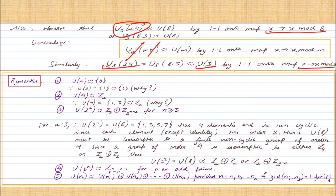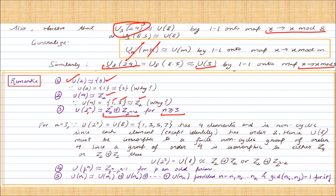To solve problems related to group of units and subgroups, a few remarks are needed. First: U2 is isomorphic to the trivial group. Second: U4 is isomorphic to Z2 since U4 = {1, 3} has two elements, and any group of prime order is cyclic, so it is isomorphic to Z2. Extending this: U(2^n) for n ≥ 3 is always isomorphic to Z2 × U(2^{n−2}).